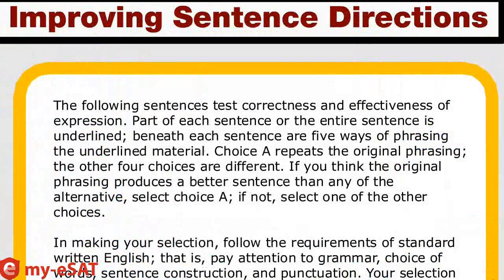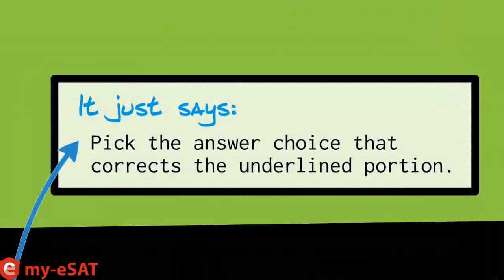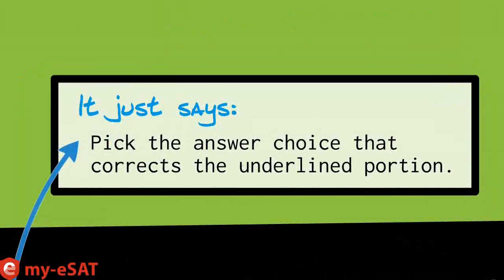The following sentence tests correctness and effectiveness of expression. Part of each sentence, or the entire sentence, is underlined. Beneath each sentence are five ways of phrasing the underlined material. Choice A repeats the original phrasing; the other four choices are different. If you think the original phrasing produces a better sentence than any of the alternatives, select choice A. If not, select one of the other choices. Basically, you're going to see sentences with parts of them underlined — sometimes the whole thing — and then look through the answer choices to see which best corrects the underlined portion.